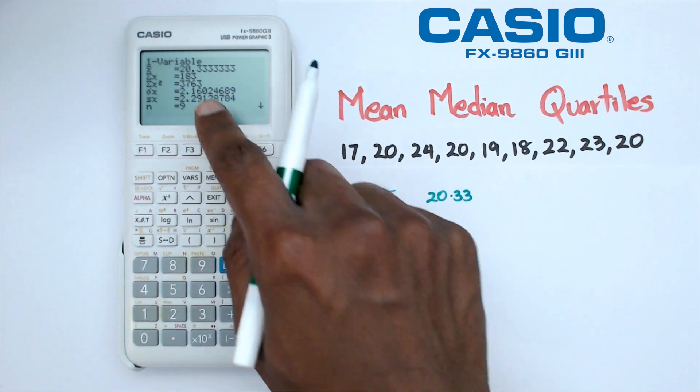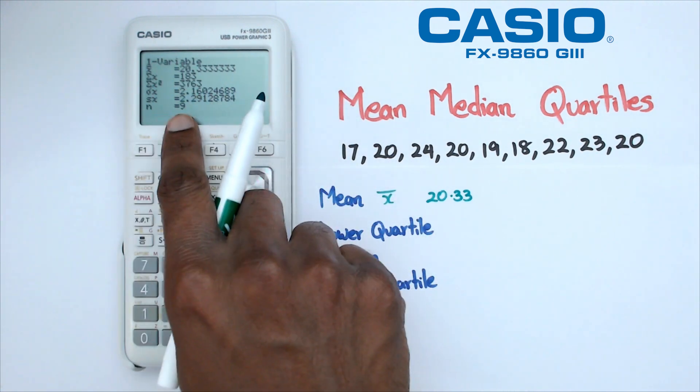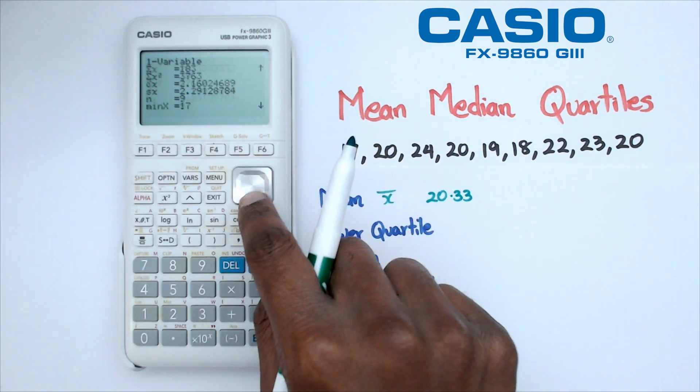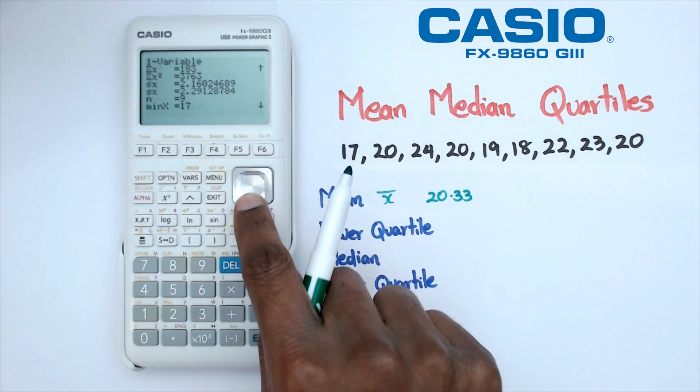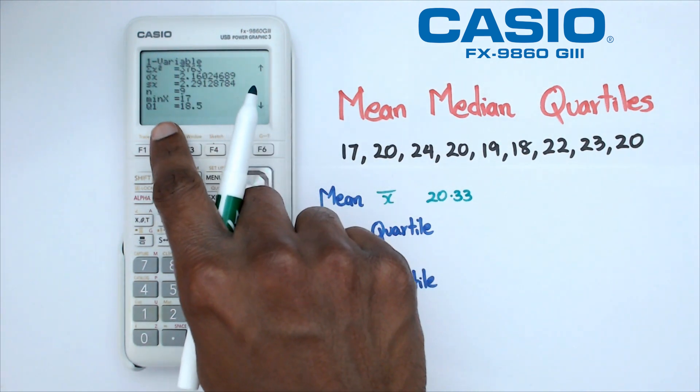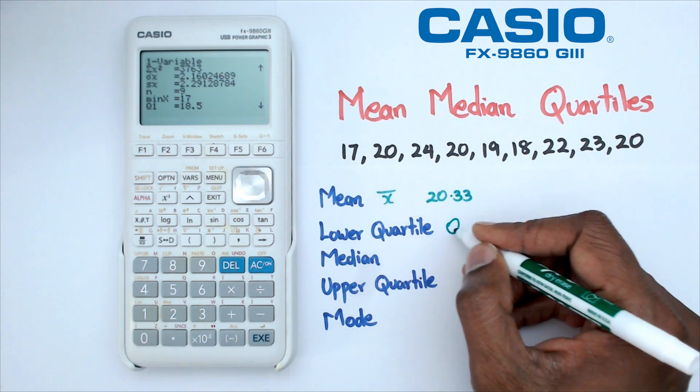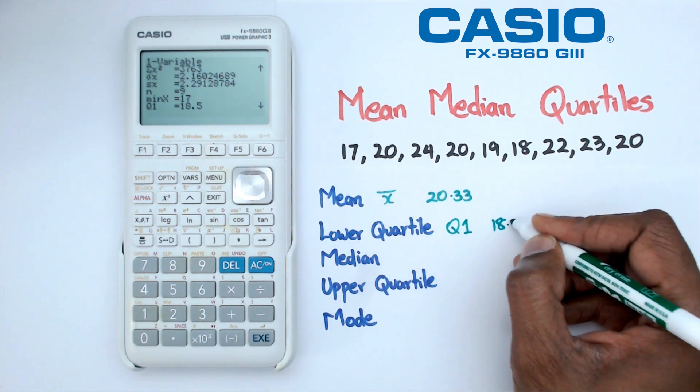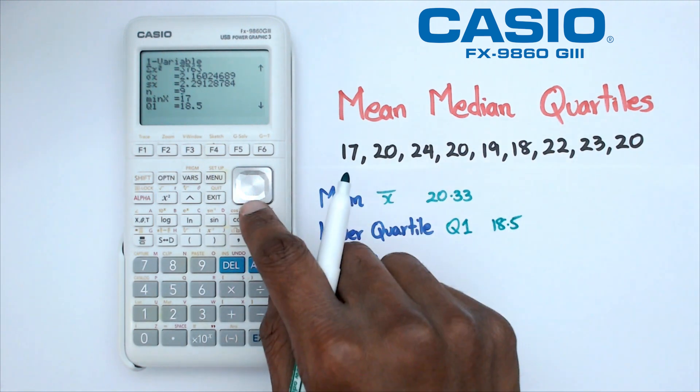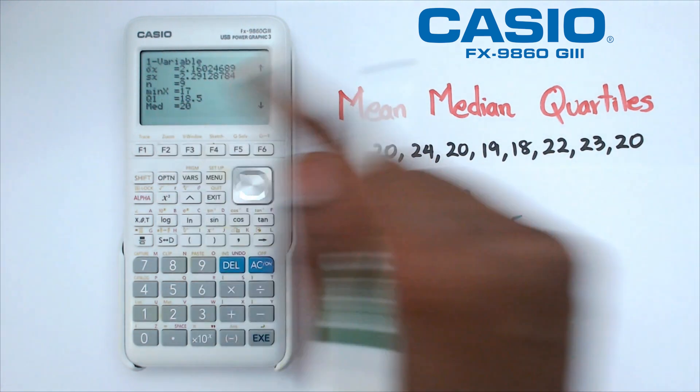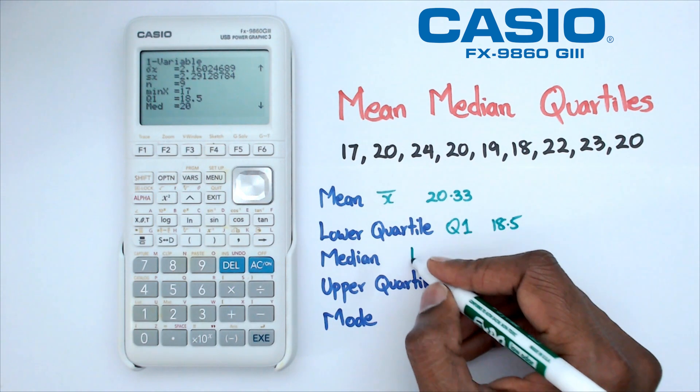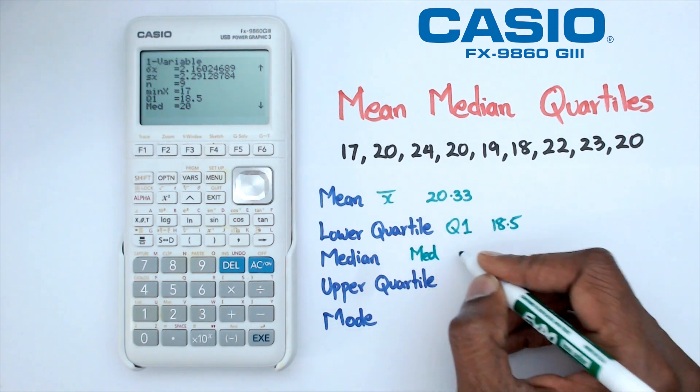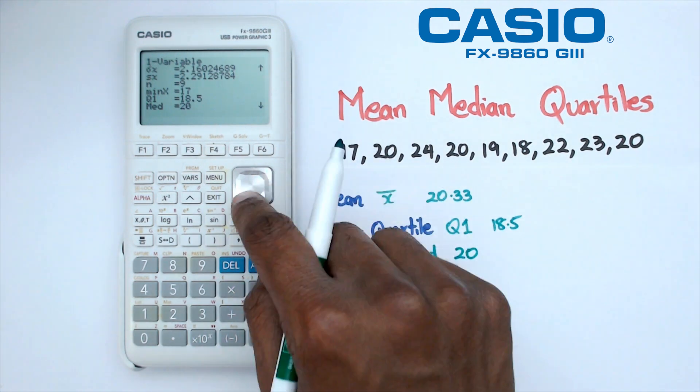Then what we want to do is we want to go down and we can have a look at n, that's nine numbers that's actually stored in it. We've got the minimum value, which is 17. We've got Q1, which happens to be the lower quartile, and in this case it is going to be 18.5. Then if we go down to median, that is the med button, which is median, and median is 20.